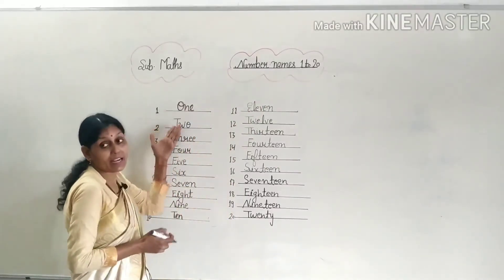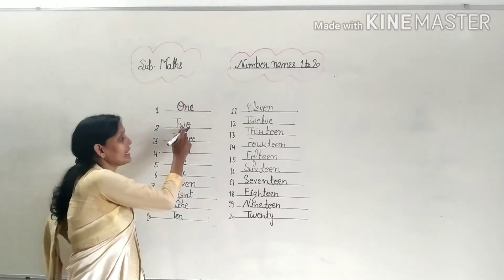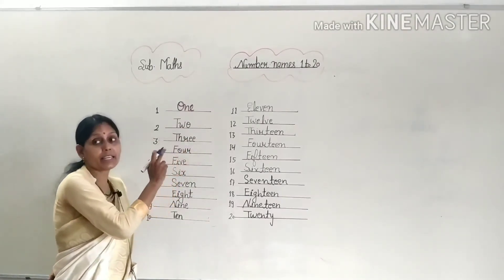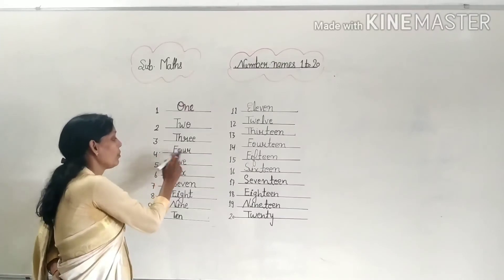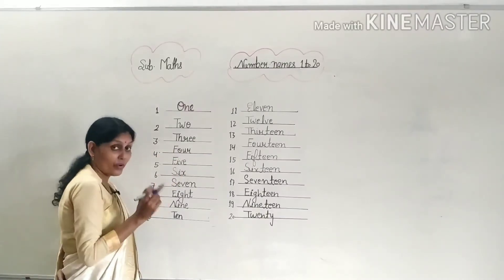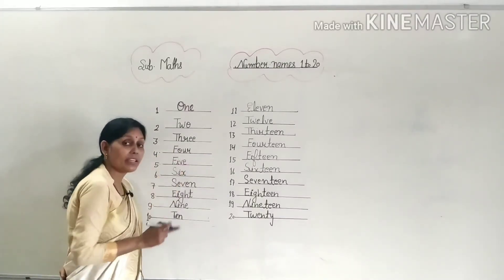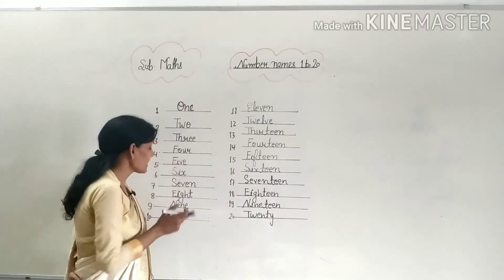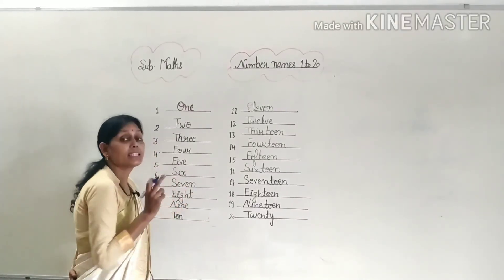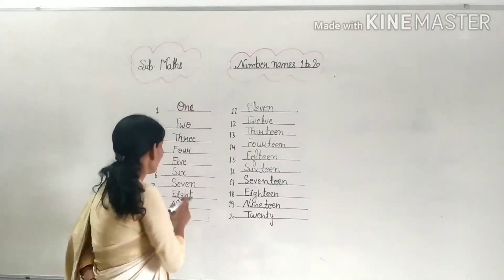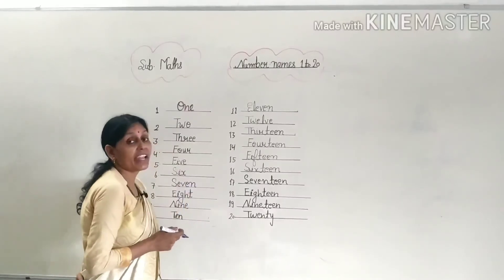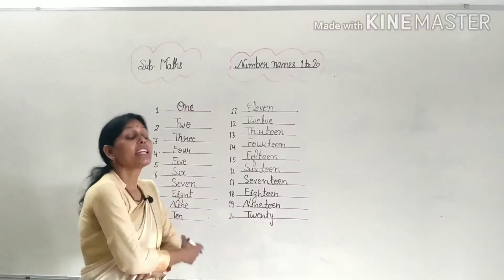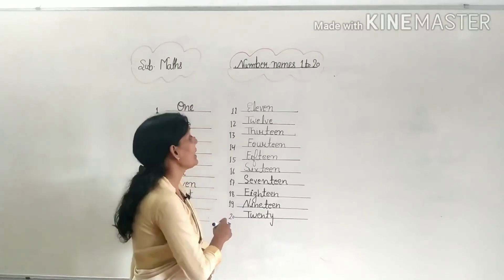Let's review: spelling of one: O-N-E 1, T-W-O 2, T-H-R-E-E 3, F-O-U-R 4, F-I-V-E 5, S-I-X 6, S-E-V-E-N 7, E-I-G-H-T 8, N-I-N-E 9, T-E-N 10.